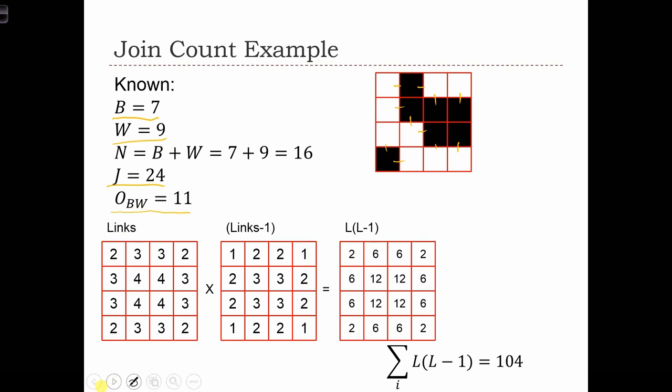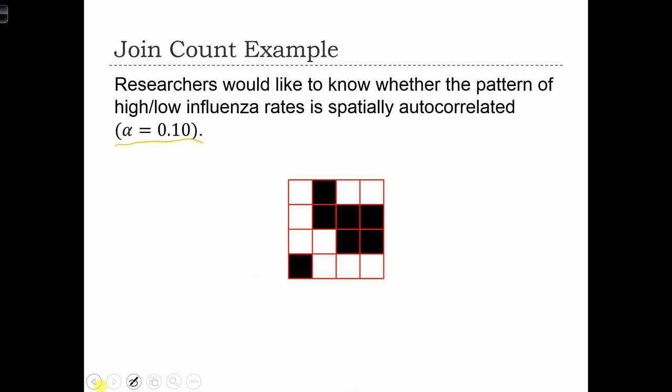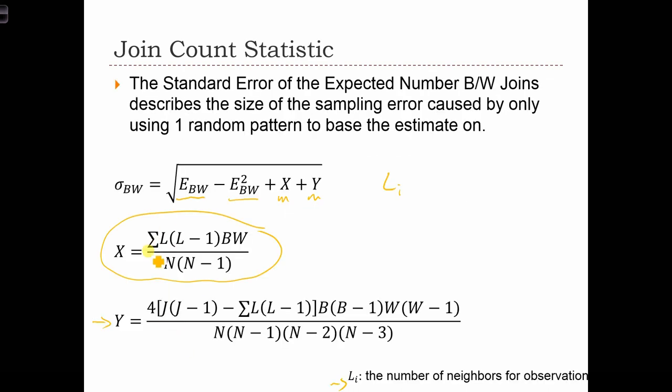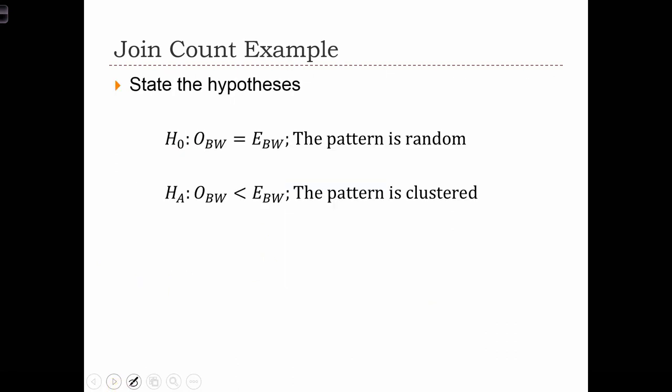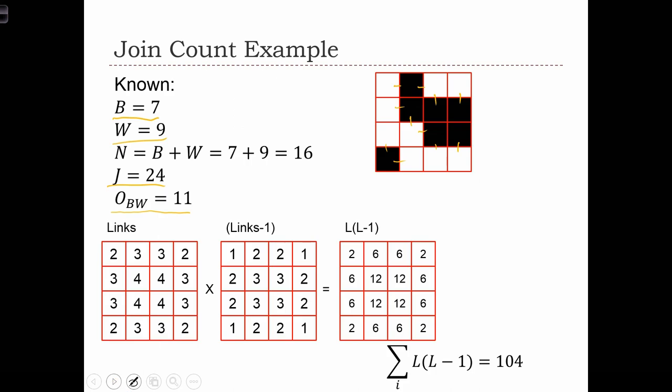Recall that in order to compute the standard error back here, we're going to have to also use the L statistic, or this count of the links per cell. So over here, I've rewritten the links variable as a map. This was formed by passing over each cell and counting how many neighbors it has.